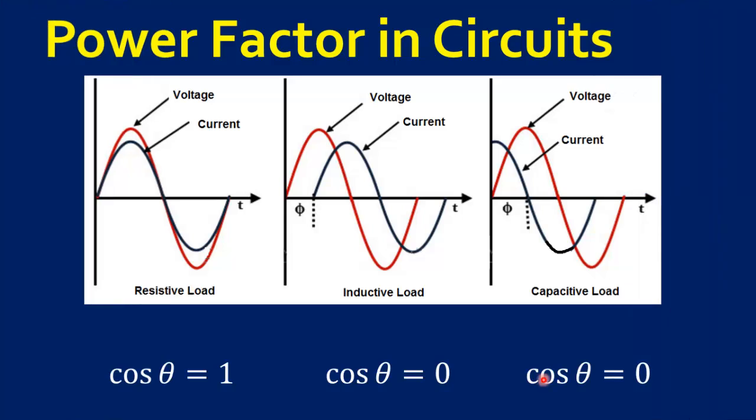At the end, we will now see what is the power factor of different types of electrical circuits. Power factor is also an angle between voltage and current. In resistive circuits, the voltage and current are in phase. The angle is zero. And power factor is unity.